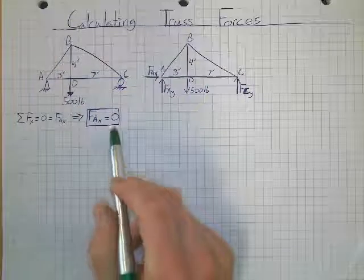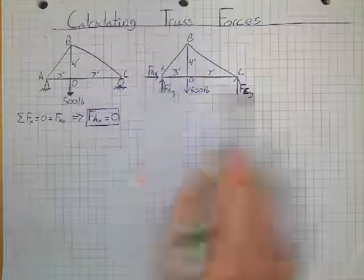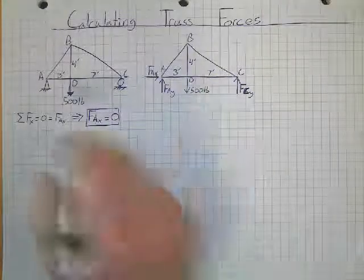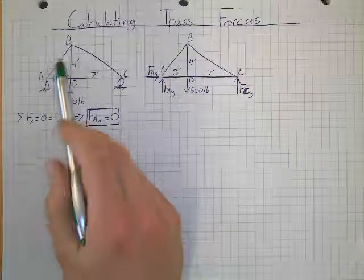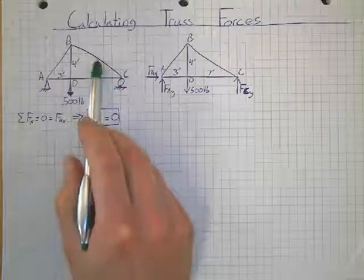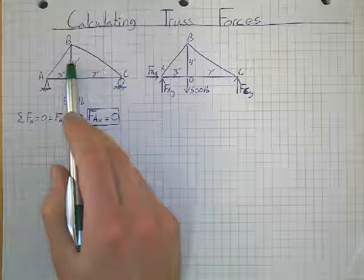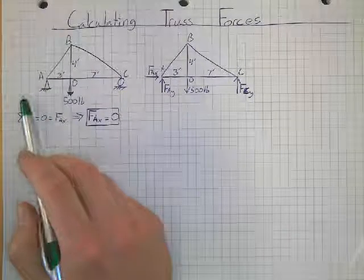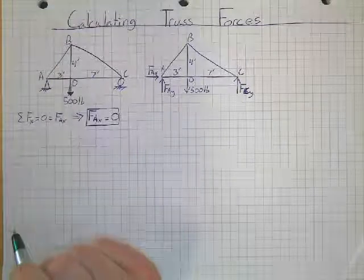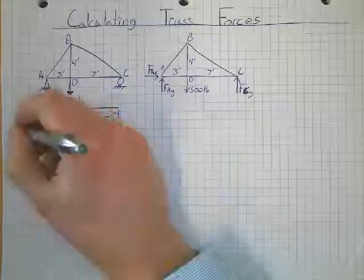When we are done, we'll have several answers. We'll have the three reaction forces answers, and then we'll also have force AB, force AD, force CD, and force BC. So we'll have one, two, three, four, five additional answers. So we'll have eight total answers for this. All right, jumping back. So I figured out that my FAX is equal to 0.